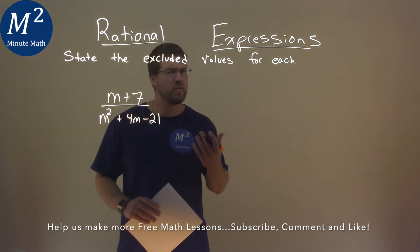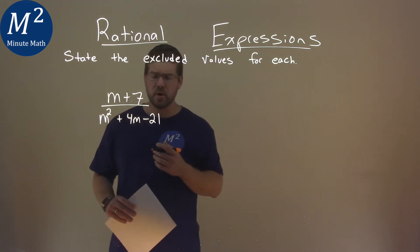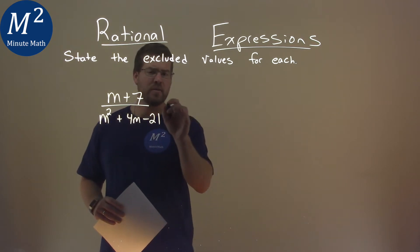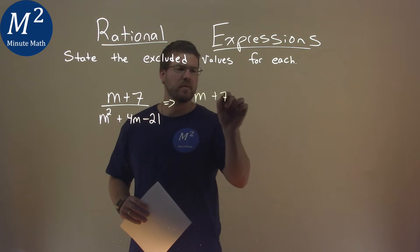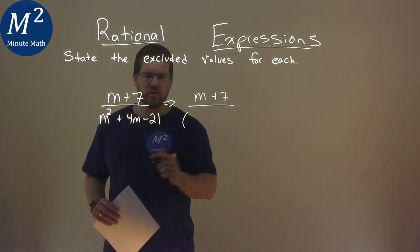Well, the excluded value really is when our denominator here is equal to 0. So we have to find what values, or when does that occur? So what I'm going to do is rewrite this, but in the denominator, we're going to factor this.